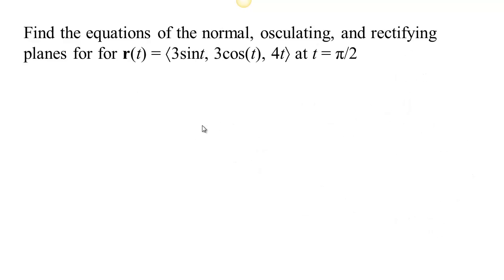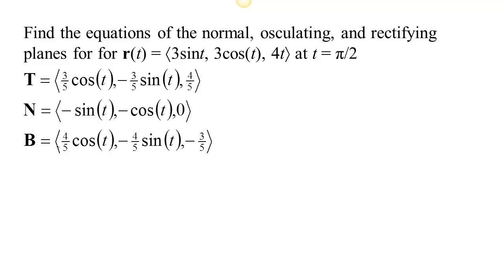Let's do an example. We'll find the equations of the normal, osculating, and rectifying planes to this curve. Those planes differ depending on location, so we need to find them at a particular time. We'll find them at time t equals pi halves. We've already calculated T, N, and B for this curve, so we just need to evaluate those at t equals pi halves.